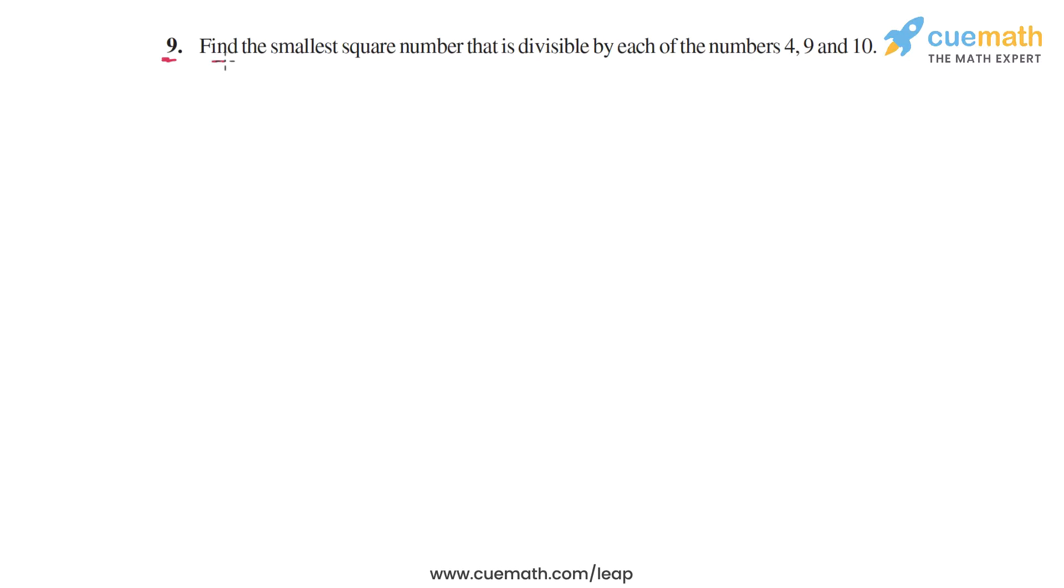In question 9, we have to find the smallest square number that is divisible by each of the numbers 4, 9, and 10. So we have to find the smallest perfect square number which is a multiple of each of these numbers: 4, 9, and 10.